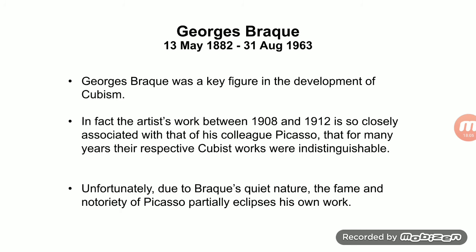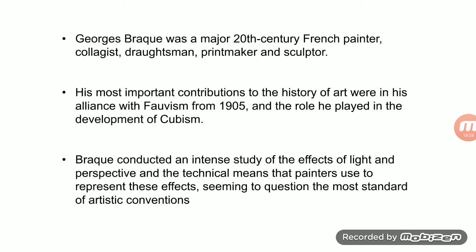George Braque was a key figure in the development of Cubism. His work between 1908 and 1912 is so closely associated with his colleague Picasso that the two were working on Cubism alongside each other. Braque was a major 20th-century painter, collagist, draftsman, printmaker, and sculptor. His most important contributions were his alliance with Fauvism around 1905 and the role he played in the development of Cubism.